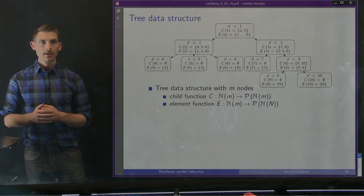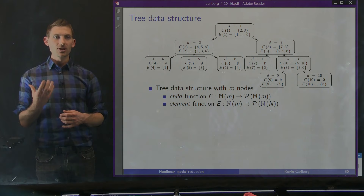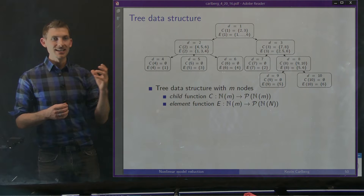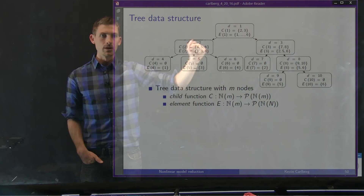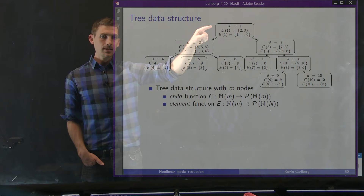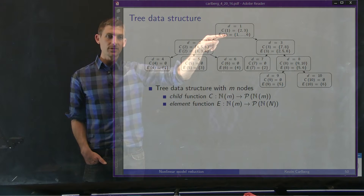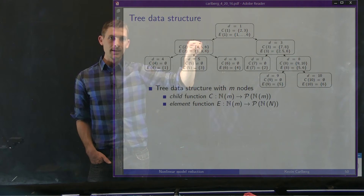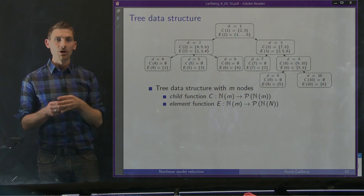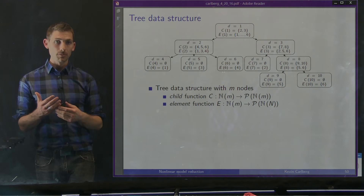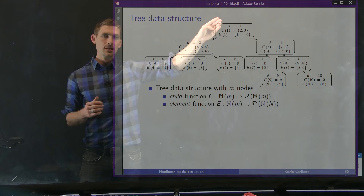We reason about refinement using a tree data structure that encodes how we split a given basis vector. A current node is characterized by an index — say d equals 1 — and a child function describing the tree topology. If a vector in state 1 is split, it becomes two vectors in states 2 and 3. The element function describes which elements of a vector in that state are non-zero.